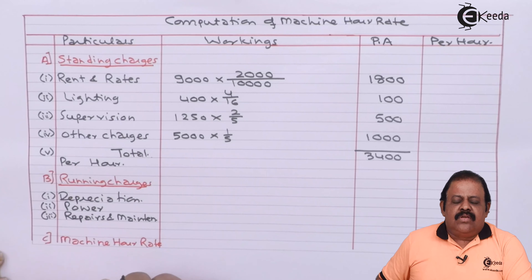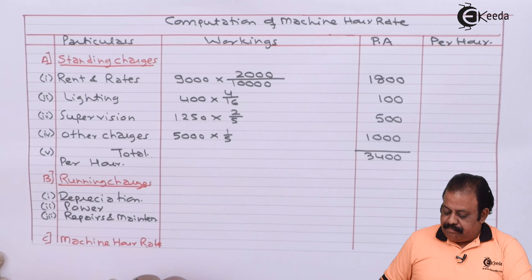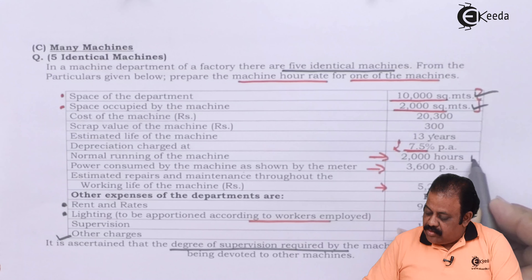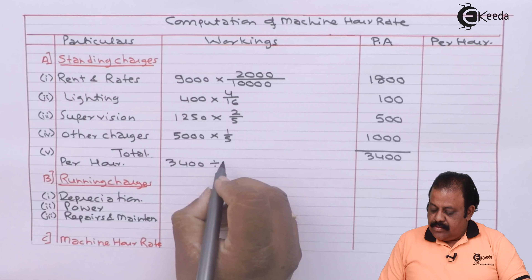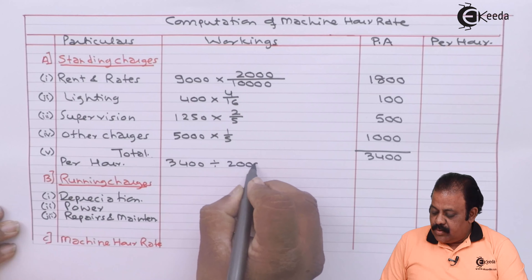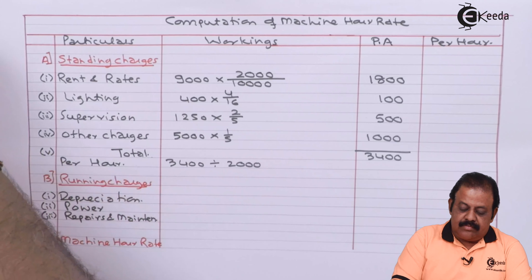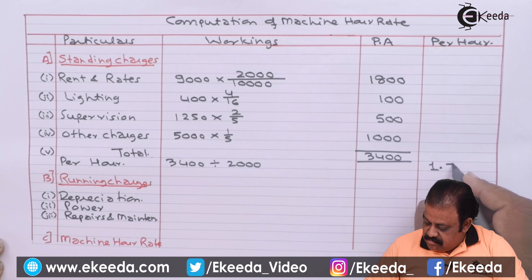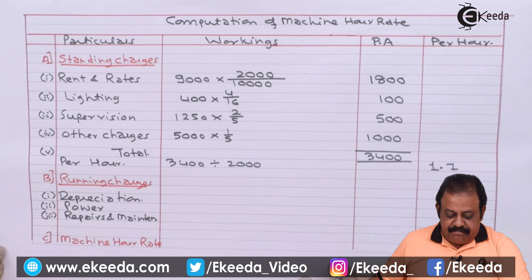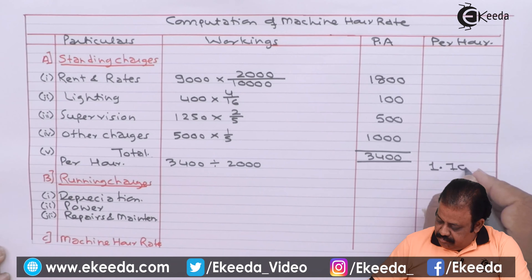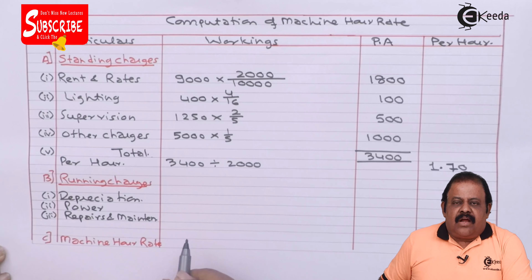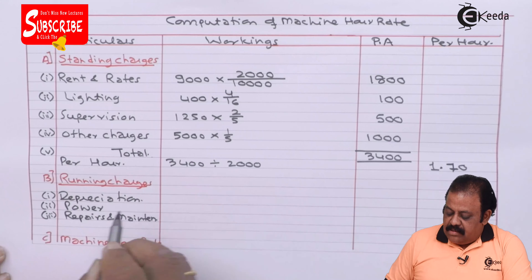Now we can take the total of standing charges, which comes to Rs. 3,400. Normal running of the machine is 2,000 hours, so dividing by 2,000 gives standing charges per hour of Rs. 1.70.